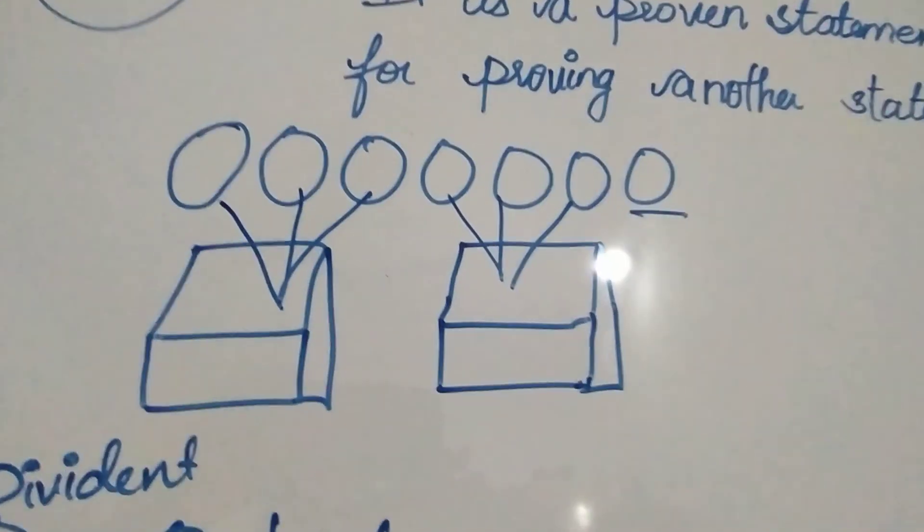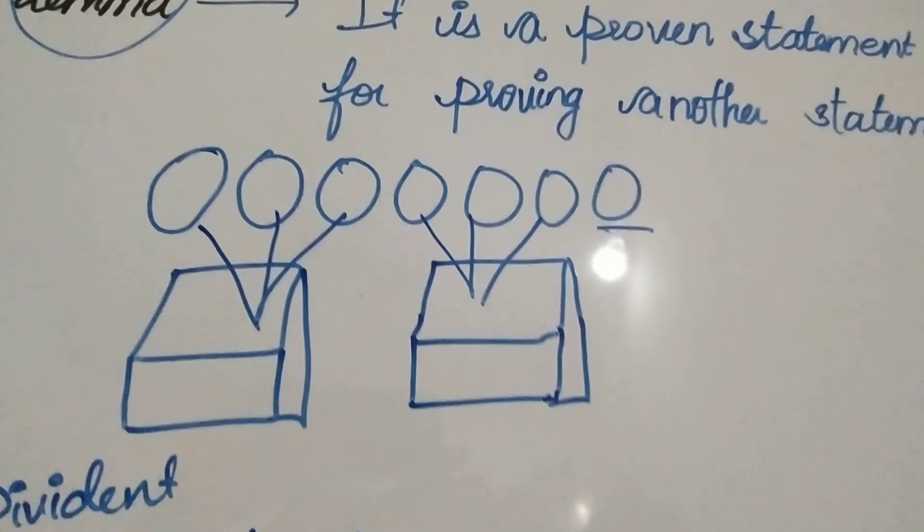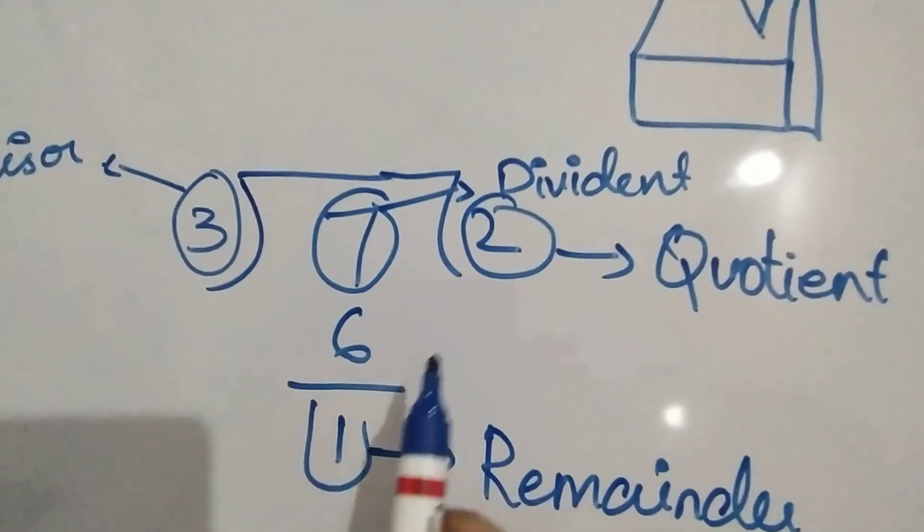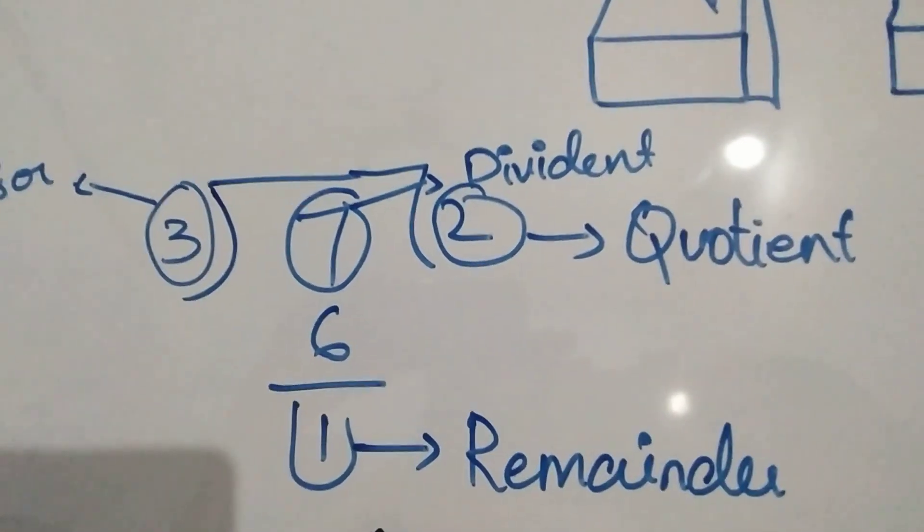How can we represent this scenario using basic division? 3 into 2 that is 6 and 1 is the remainder.